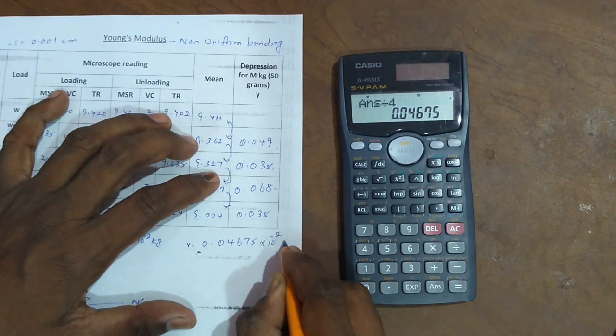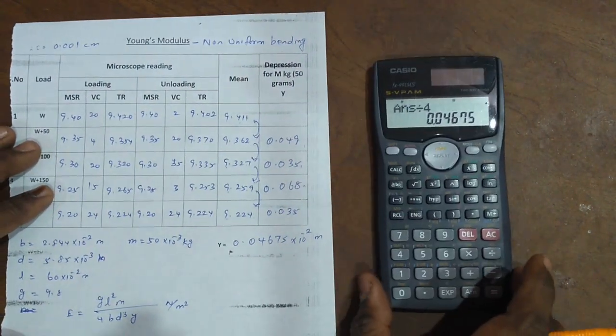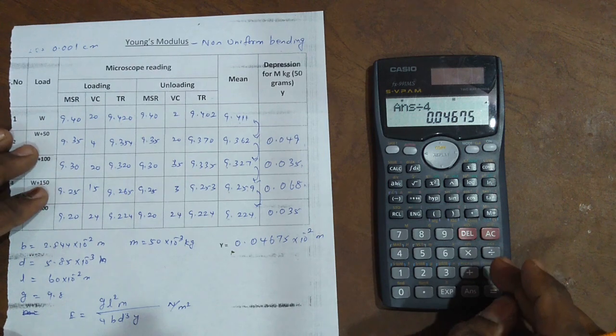The answer is 0.04675 into 10 to the minus 2 meters. This is depression for the mean in non-uniform bendings.